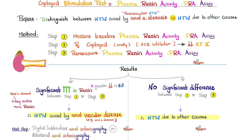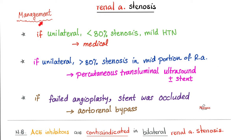When a kidney with a narrow renal artery is further burdened by an ACE inhibitor, blood pressure will decrease even more, because the kidney's only hope — the renin-angiotensin-aldosterone system — has been blocked. This is why we do not give ACE inhibitors to patients with bilateral renal artery stenosis.